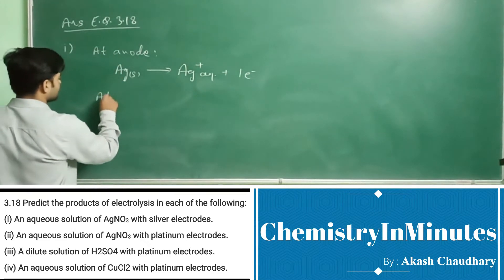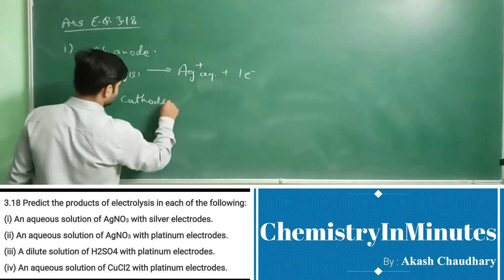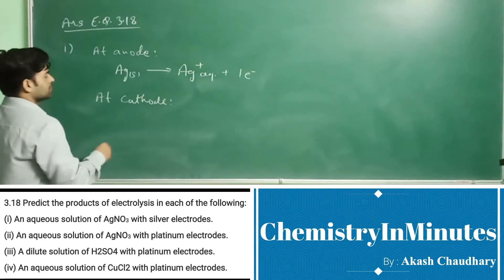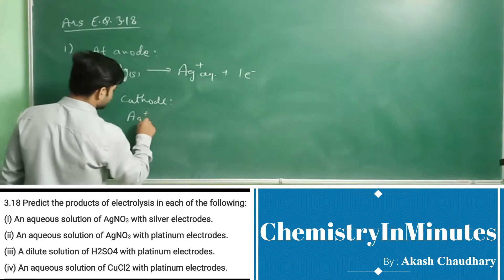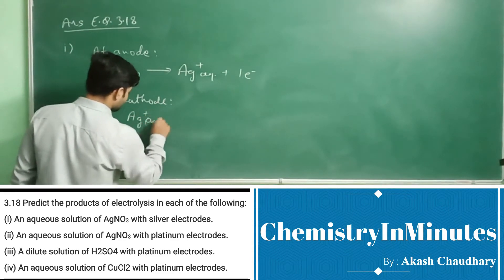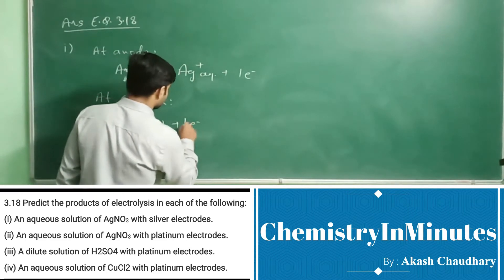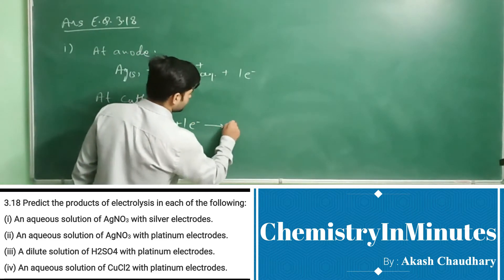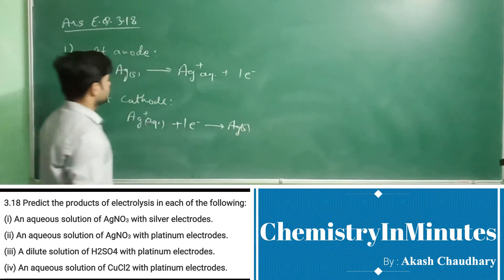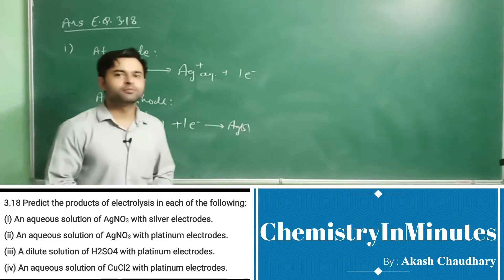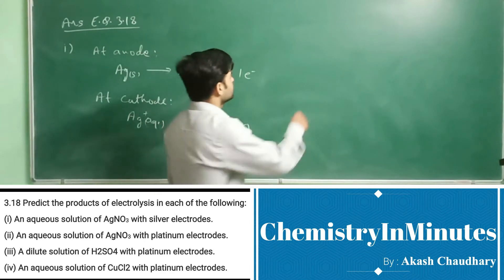At cathode, reduction of silver ion will take place: Ag⁺(aq) + e⁻ → Ag(s). So at cathode, silver metal is being deposited.